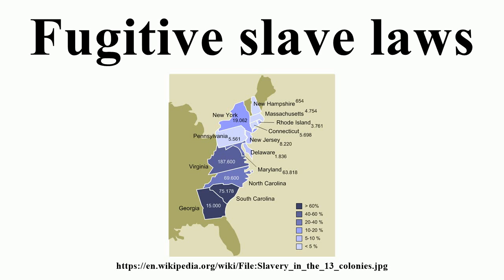Indiana in 1824 and Connecticut in 1828 provided jury trial for fugitives who appealed from an original decision against them. In 1840, New York and Vermont extended the right of trial by jury to fugitives and provided them with attorneys. As early as the first decade of the 19th century, individual dissatisfaction with the law of 1793 had taken the form of systematic assistance rendered to African Americans escaping from the South to Canada or New England — the so-called Underground Railroad. The Supreme Court's decision in Prig v. Pennsylvania in 1842, that state authorities could not be forced to act in fugitive slave cases but that national authorities must carry out the national law, was followed by legislation in Massachusetts, Vermont, Pennsylvania, and Rhode Island forbidding state officials from aiding in enforcing the law and refusing the use of state jails for fugitive slaves.